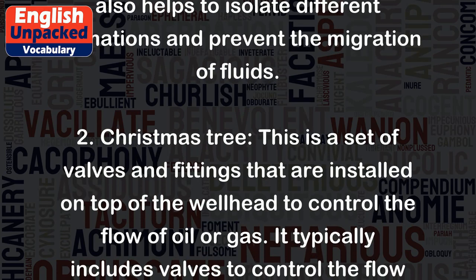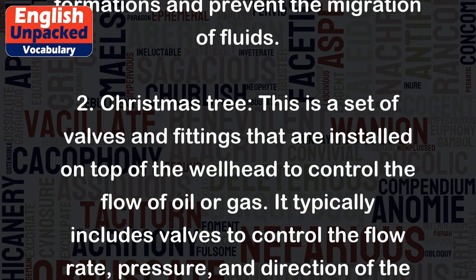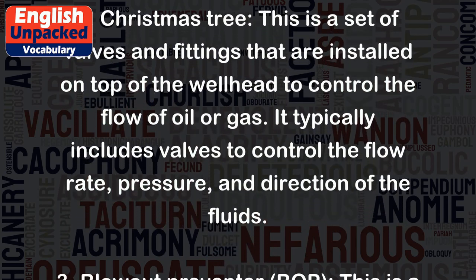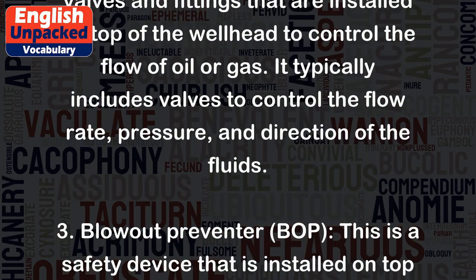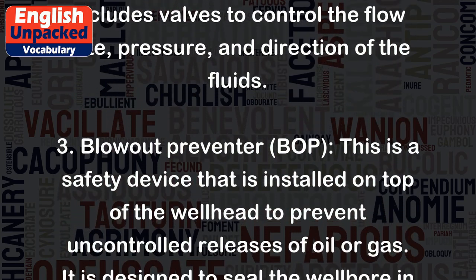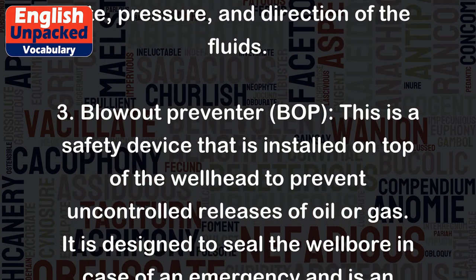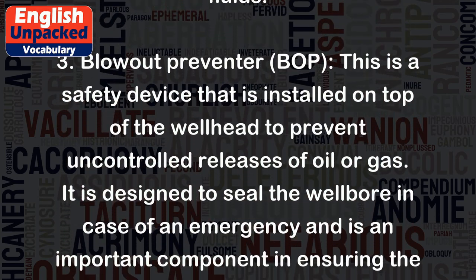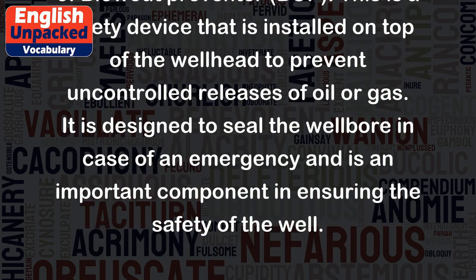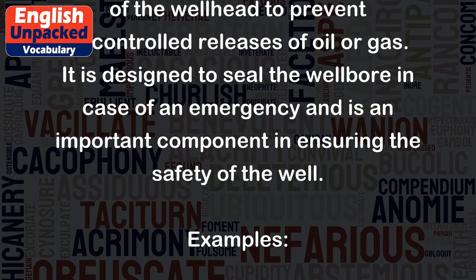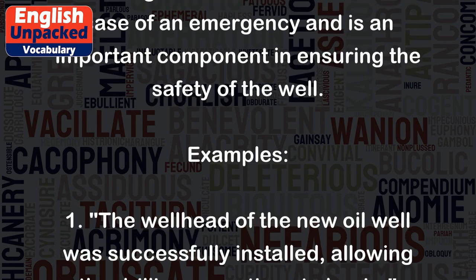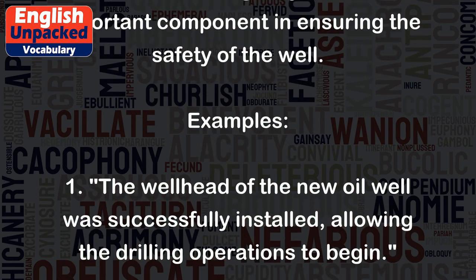2. Christmas tree. This is a set of valves and fittings that are installed on top of the wellhead to control the flow of oil or gas. It typically includes valves to control the flow rate, pressure, and direction of the fluids. 3. Blowout preventer. This is a safety device that is installed on top of the wellhead to prevent uncontrolled releases of oil or gas. It is designed to seal the wellbore in case of an emergency and is an important component in ensuring the safety of the well.